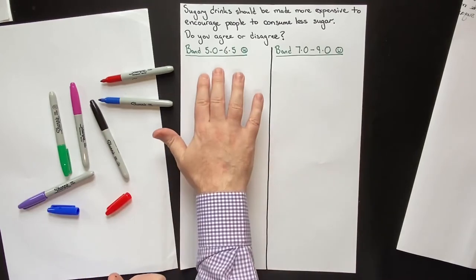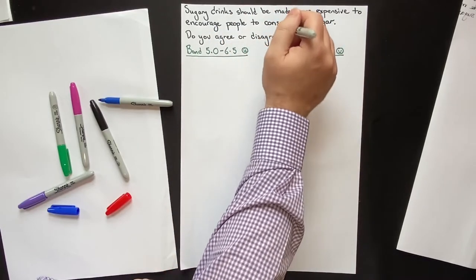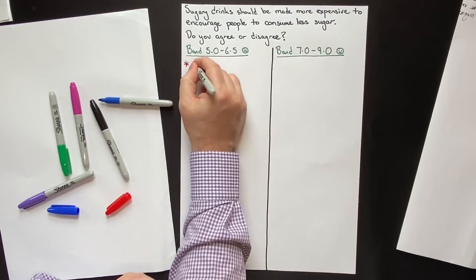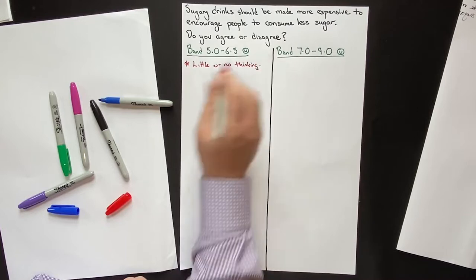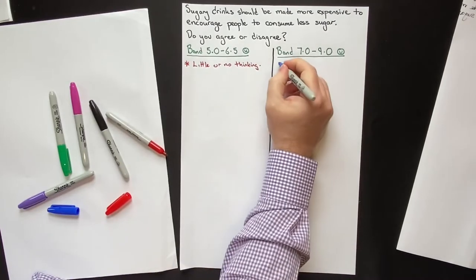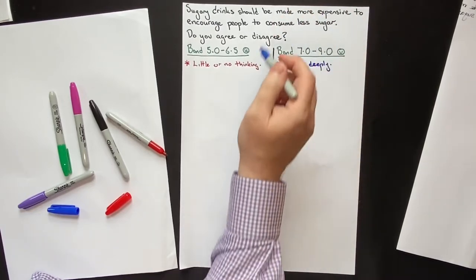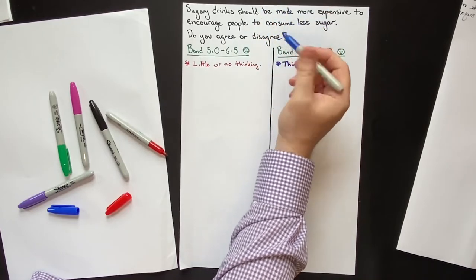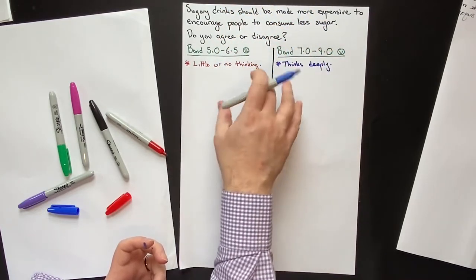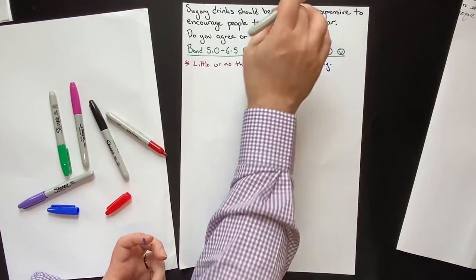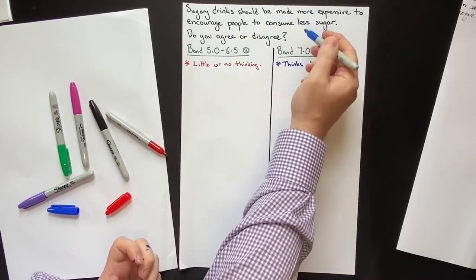Without further ado, I'm going to show you the main differences between these two students. It all starts with the Task 2 question. The lower-scoring student does little or no thinking, whereas the higher-scoring student thinks deeply about the question — because without fully understanding the question, you will never be able to generate clear, relevant ideas, and without clear relevant ideas, you will never be able to actually answer the question.